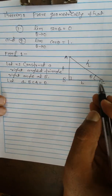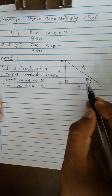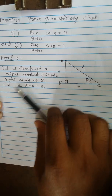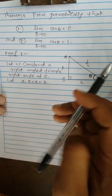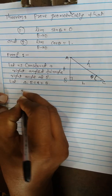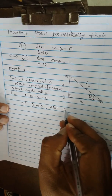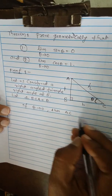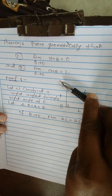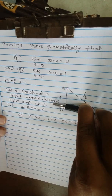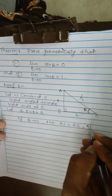We must concentrate here: if theta tends to 0, if this theta becomes very near to 0, closer to 0, then this hypotenuse line must coincide with this baseline. It means AC should coincide with BC. If theta tends to 0, then AC coincides with BC, meaning AC will equal BC. And as theta decreases toward 0, this line comes down and coincides with BC, so this altitude AB becomes almost 0.